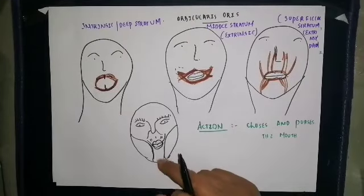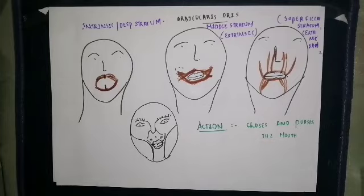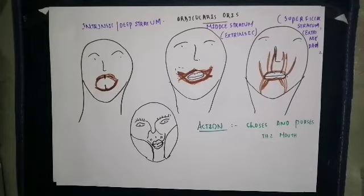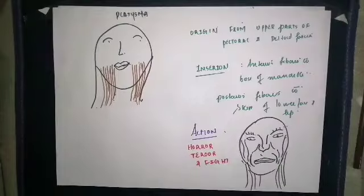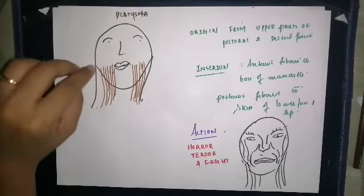The action of orbicularis oris is closing the mouth and pursing the lips. It is responsible for the pursing expression of the mouth, and also assists in closure of the mouth.